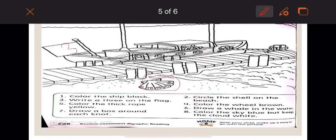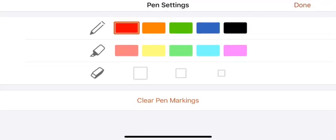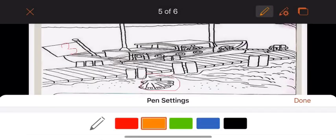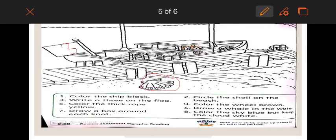Color the wheel brown. There's a wheel on the ship. I'm going to color it brown. I don't have brown here, so I'm going to use orange. And I'm going to color it brown. You have to use brown.